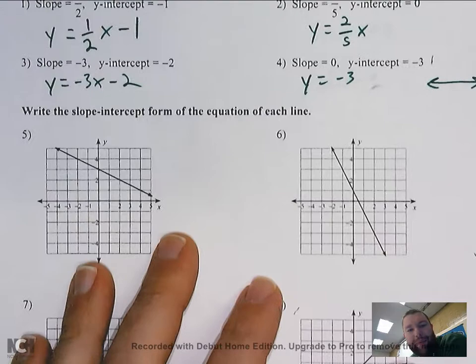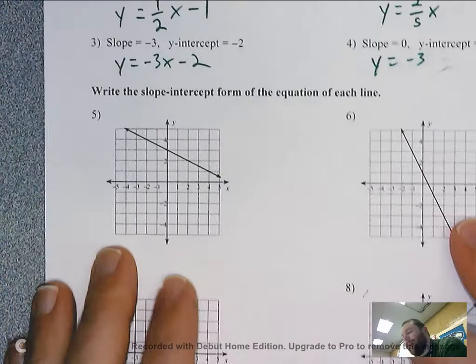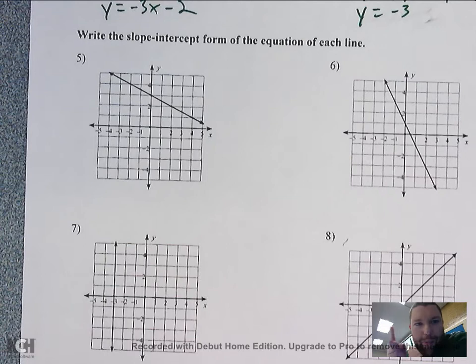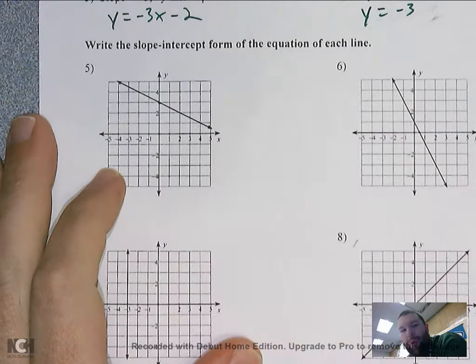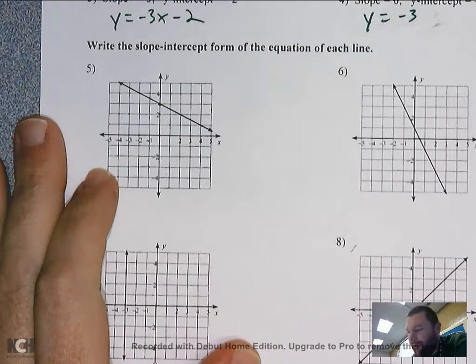Now let's try getting that from a graph. To write a linear equation from a graph I still need two things: a slope and a y-intercept. The y-intercept is usually pretty easy — it's the point where the line hits the y-axis. Here it's crossing at three on the y-axis.